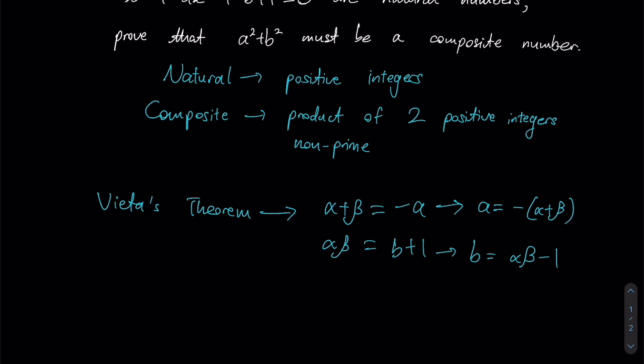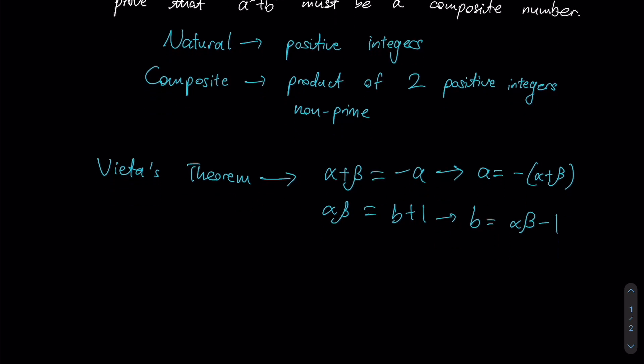Now that we have these two forms, we can start to see that a² + b² would be, well, using this value over here we have negative alpha plus beta bracket whole thing squared, plus alpha beta minus 1 whole thing squared.